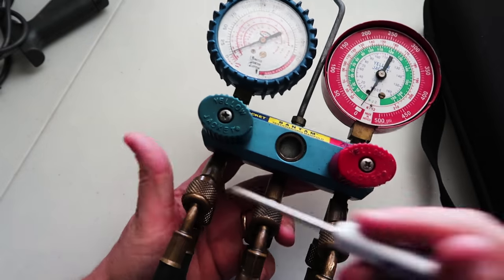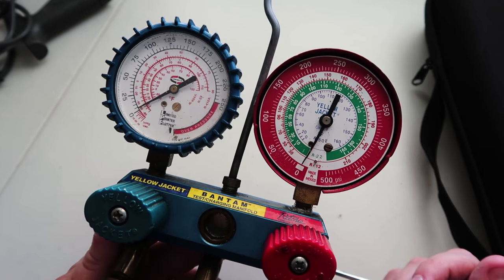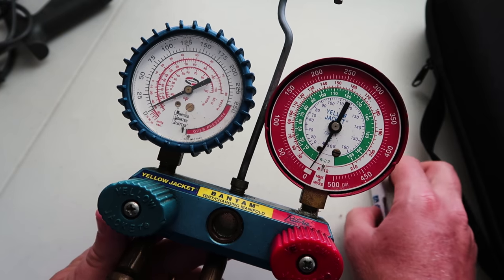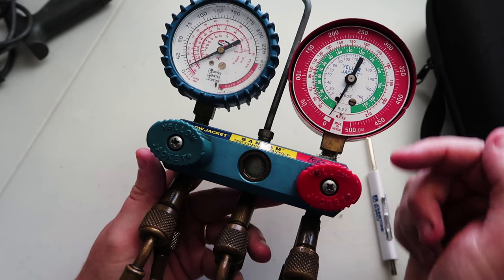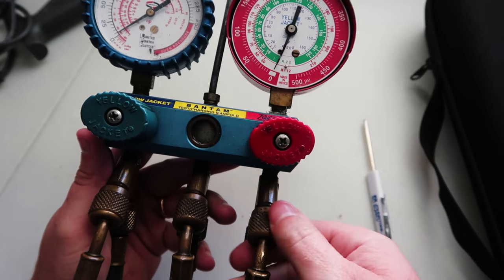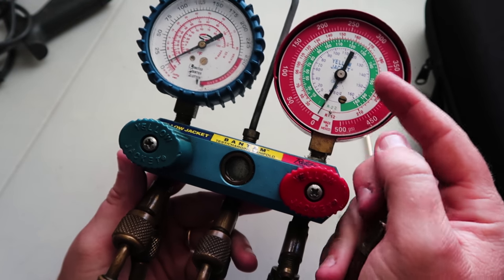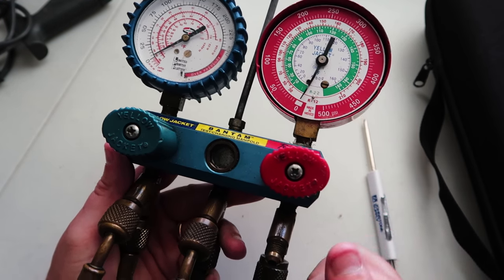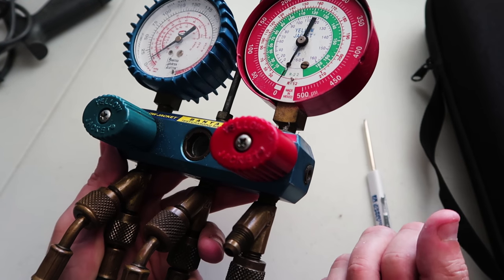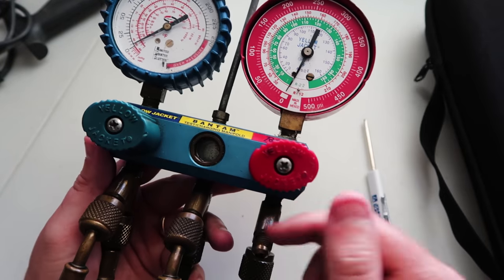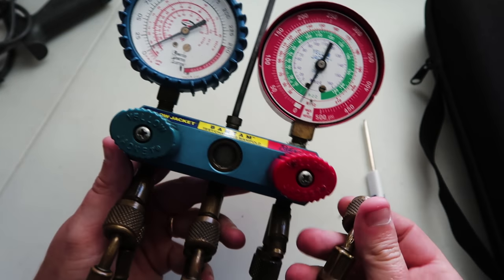For somebody who's brand new to looking at a refrigeration manifold, the first thing that they assume is that these handles somehow have something to do with what you read on the gauge, and the fact is that as soon as I connect this to a source of pressure, as soon as I thread this on, it's going to measure the pressure on the gauge. This handle doesn't have anything to do with pressure being read by the gauge. This is open through here regardless of how this handle is turned. What this handle does is it allows communication from the center to the other side, and we'll talk a little bit more about that in just a second.